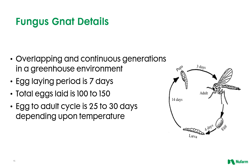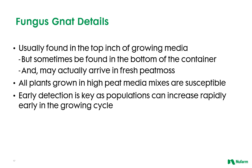Fungus gnats have overlapping and continuous generations in a greenhouse environment. The female adult egg-laying period is seven days, during which she can lay 100 to 150 eggs. The egg-to-adult life cycle is 25 to 30 days, depending on temperature. Fungus gnat larvae are usually found in the top inch of growing media, but also can be found at the bottom of the container. All plants grown in high peat-media mixes are susceptible. Indeed, fresh peat moss may already contain eggs and larvae of fungus gnats.